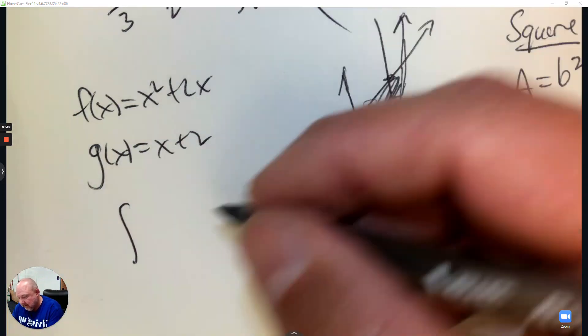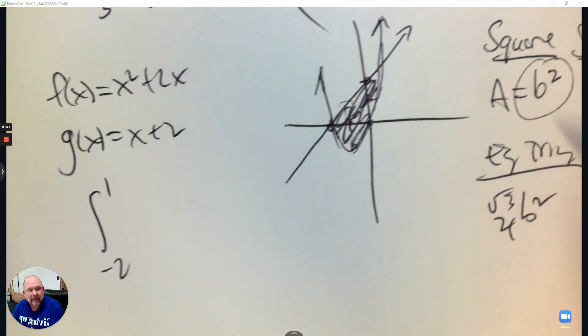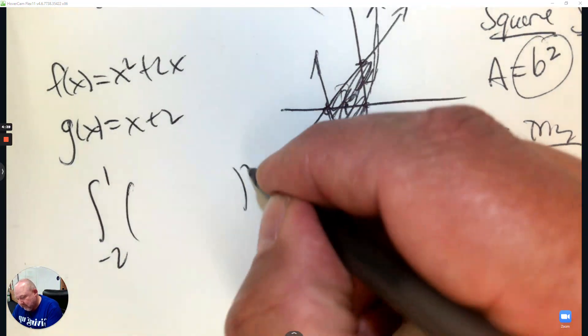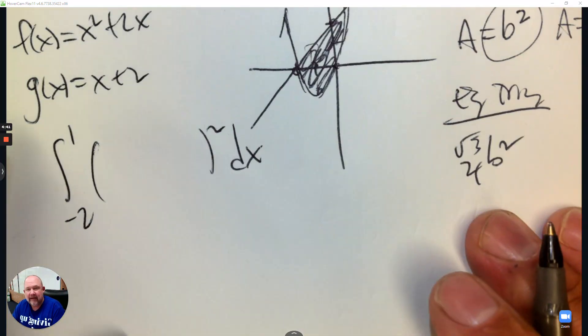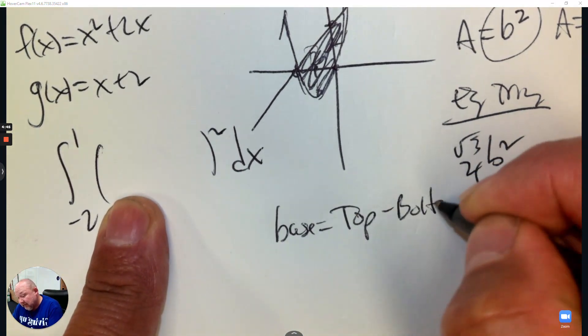The integration is like before. It goes negative 2 to 1. We already found that. And then we use this formula, which is the base squared. And I need to know what the base is: top subtract bottom, just like you found area.